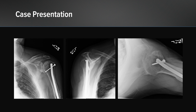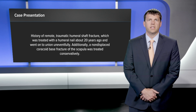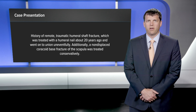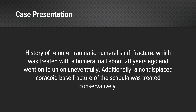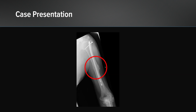There are bone-on-bone changes confirmed on the axillary view, and importantly there's a humeral nail from his remote trauma that is present. His history included a humeral shaft fracture treated with a humeral nail which went on to union uneventfully. In addition, he had a non-displaced coracoid base fracture of his scapula which was treated conservatively and has been asymptomatic. You can see full-length views of the humerus and the union site at the mid-shaft.